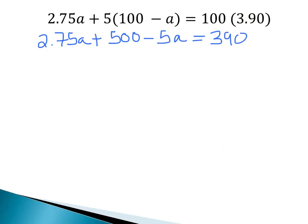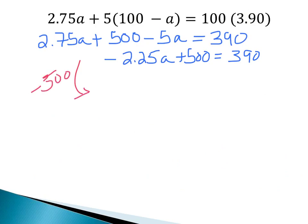Now let's collect like terms on the left-hand side. When we do that, we get negative 2.25A plus 500 equals 390. Now let's go ahead and subtract 500 from both sides. When we do that, we get negative 2.25A, and that's equal to negative 110.